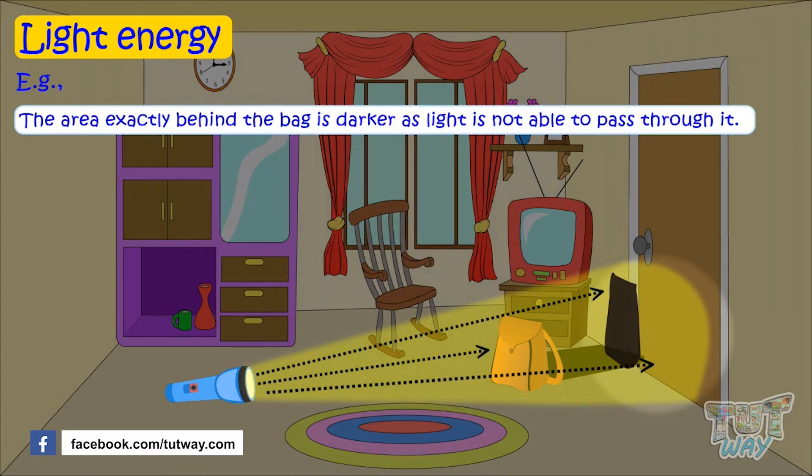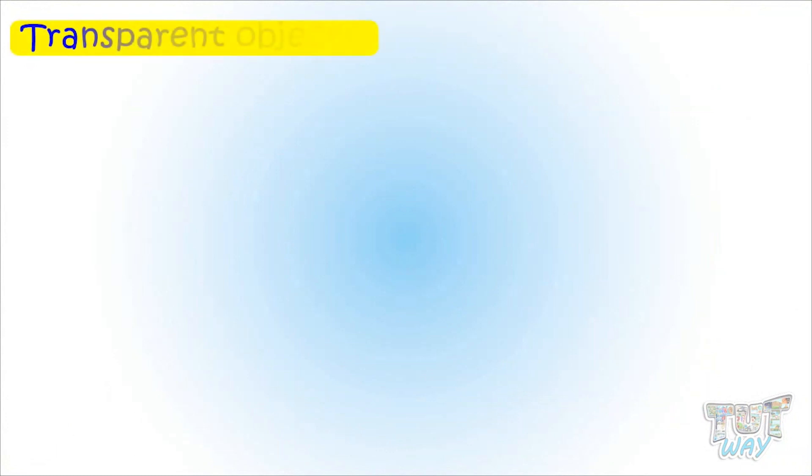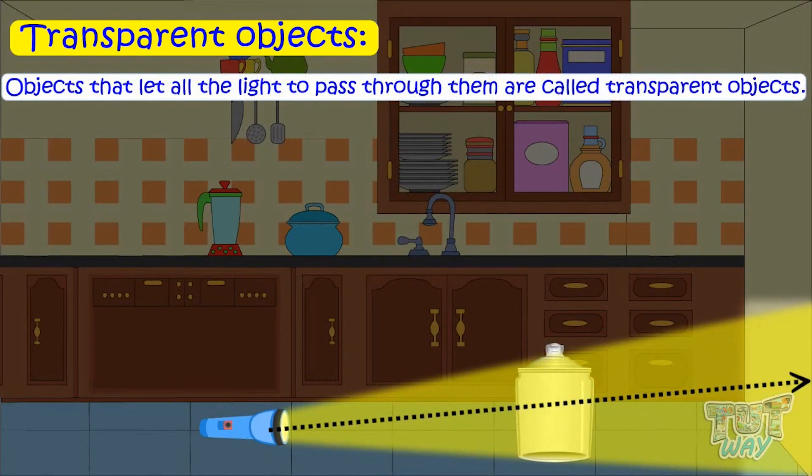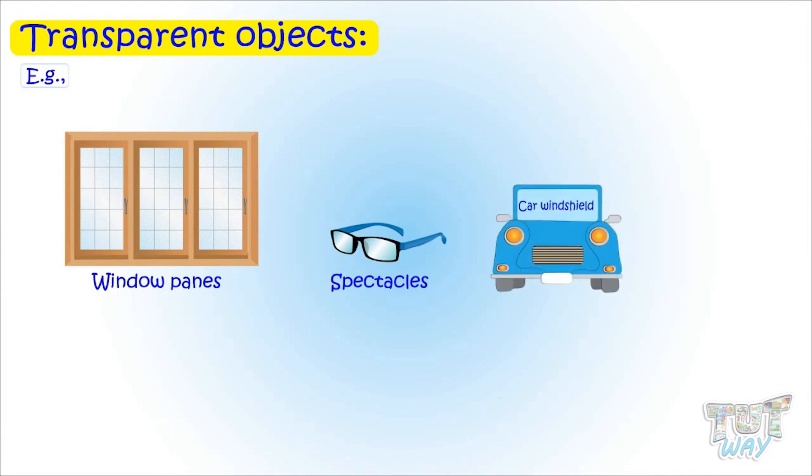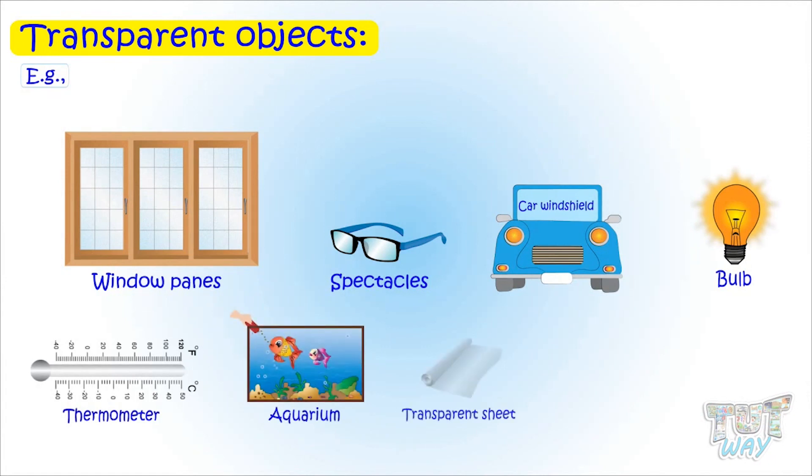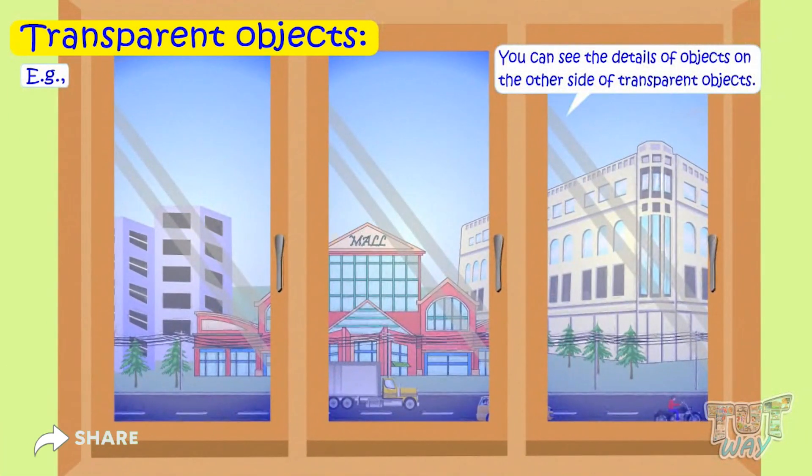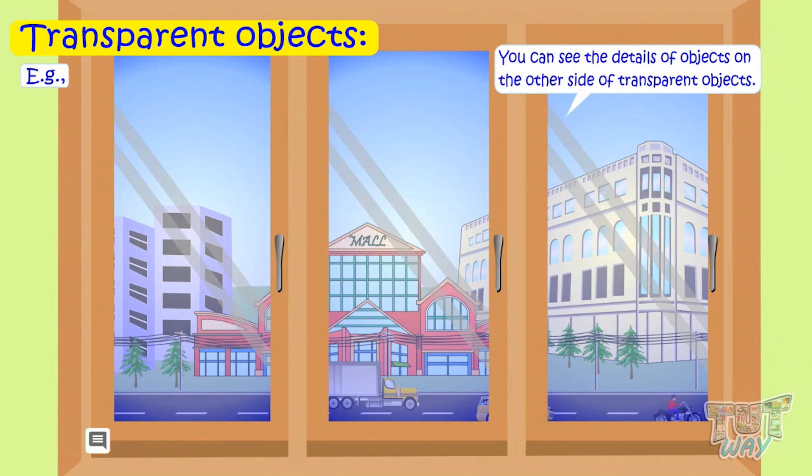And this is what we call a shadow. So transparent objects. Objects that let all the light pass through them are called transparent objects or clear objects, like any clear glass or clear plastic. Examples: window panes, spectacles, car windshields, light bulb, thermometer, aquarium, transparency sheets, ice, and clean water are examples of transparent things. You can see the details of the objects on the other side of transparent objects. It is because all the light passes through.